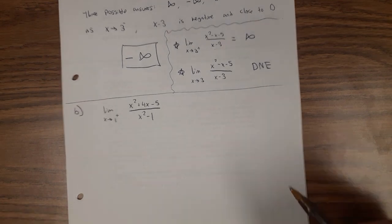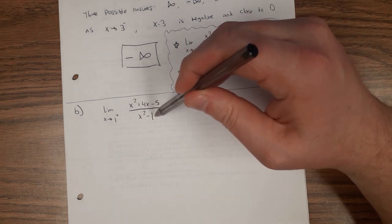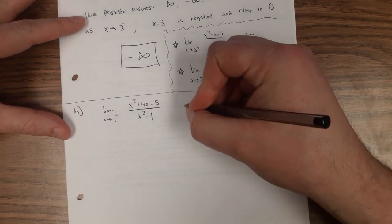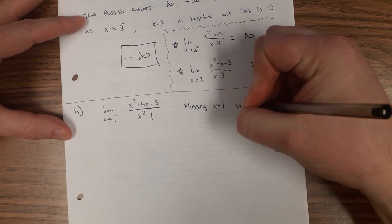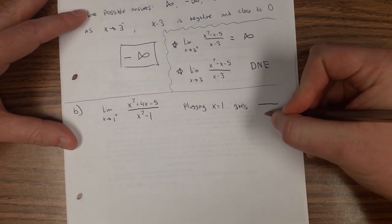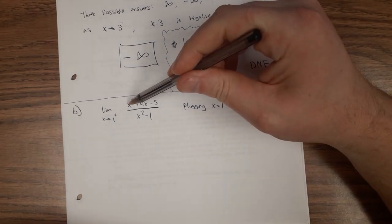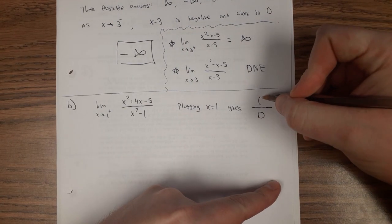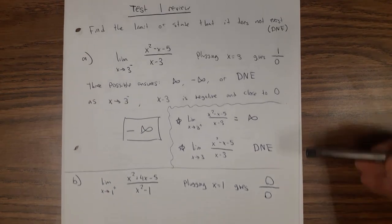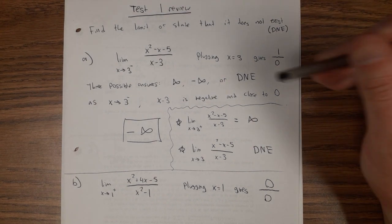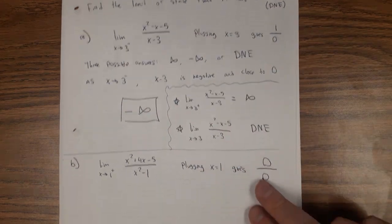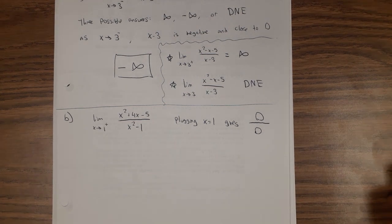Moving on to the next problem. Since this is an elementary function, I'll try plugging in x first. I can already see I'm going to get zero on the bottom. Let's see what we get on the top: when I put in 1, I get 1 plus 4 minus 5, which is zero. So this is different from the last one — this time we got zero on both the bottom and the top.